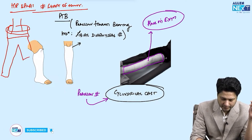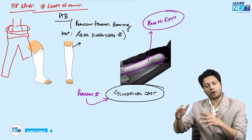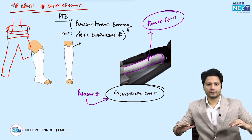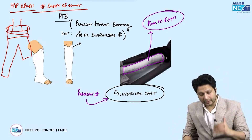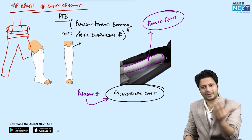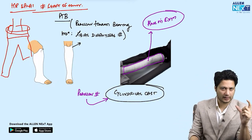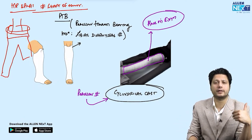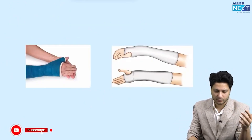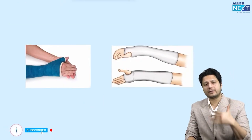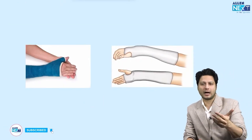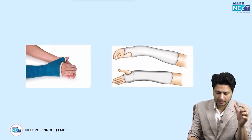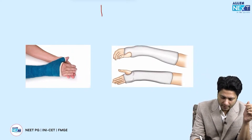The half-cast on the opposite side extends above the knee joint. So the entire lower limb from the pelvis is enclosed inside the cast — that is the hip spica cast. As far as upper limb casts are concerned, a very commonly asked one is the scaphoid cast.